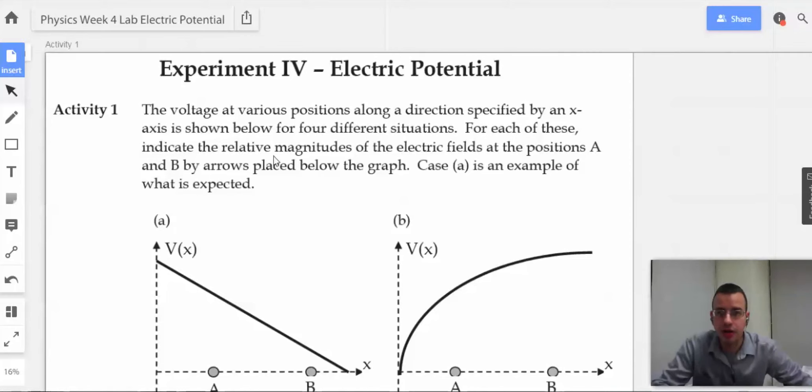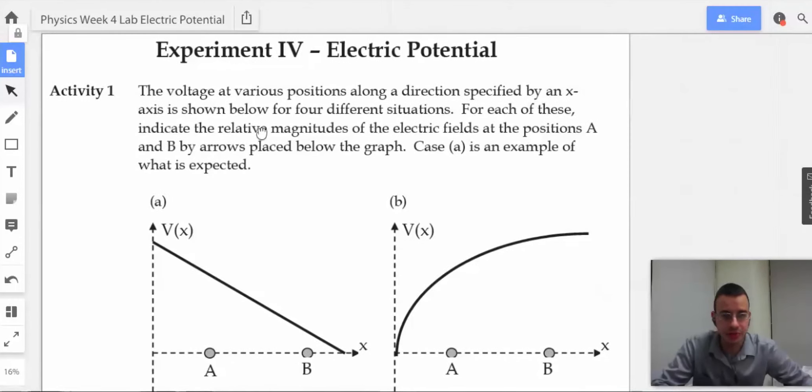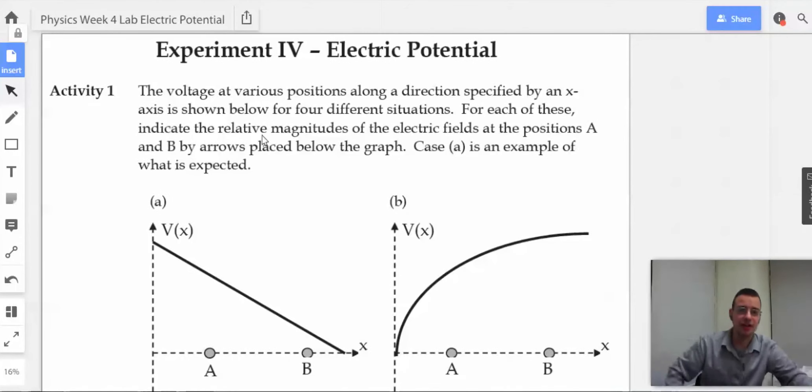Activity 1: The voltage at various positions along a direction specified by an x-axis is shown below for four different situations. For each of these, indicate the relative magnitude of the electric fields at the positions A and B by arrows placed below the graph. Case A is an example of what is expected.